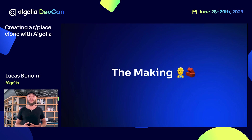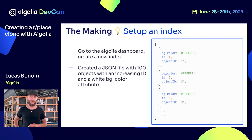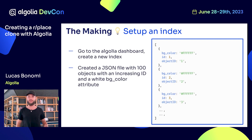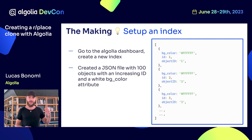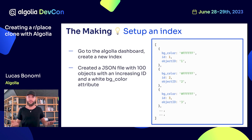Now we will start making the app. To make the app, I started by setting up an index. I went to my Algolia dashboard and created a new index. I'm super lazy, so I decided to open VS Code. I created a small JSON object with bgcolor, ID, and objectID. I duplicated it 100 times, incremented the ID for each object, and ended up with an array of 100 records. There are plenty of ways to send records to Algolia — that's the one I chose, because it was the start of my experiment and it was good enough.